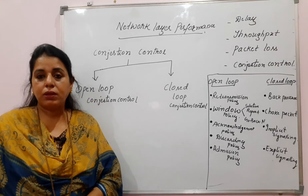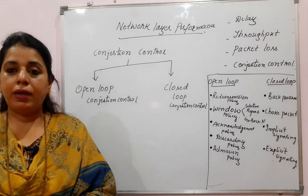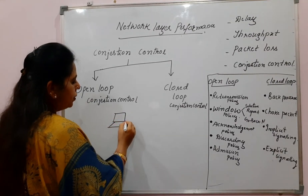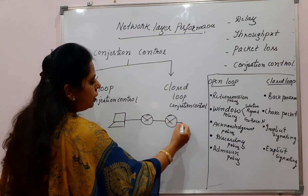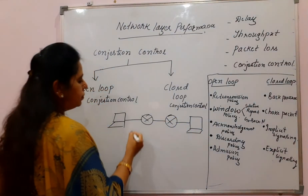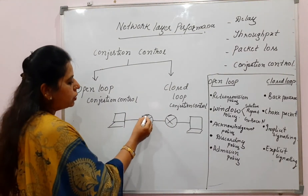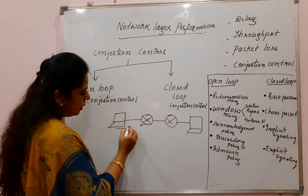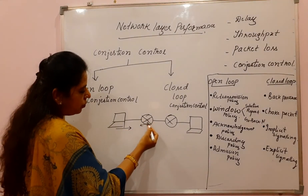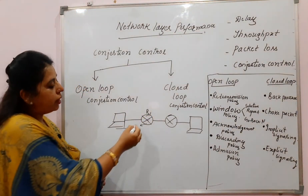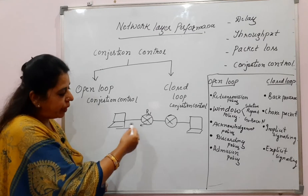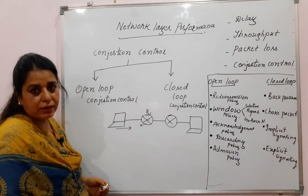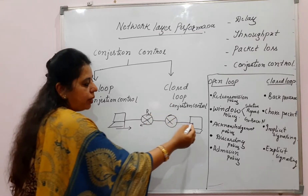You can remember congestion control and flow control concepts easily with this network scenario. A network consists of a sender, a receiver, and intermediate routers. If the routers are unable to process packets because the rate at which the sender is sending is greater than the rate at which the router is processing, there will be congestion in the network.